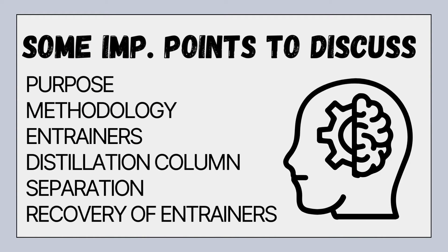The purpose of azeotropic distillation is to break or modify the azeotropes and separate components of a mixture with similar boiling points. Regarding methodology, a third component called an entrainer or azeotrope-breaking agent is introduced into the system. The entrainer forms a temporary azeotrope with one of the components, altering the overall behavior of the mixture.